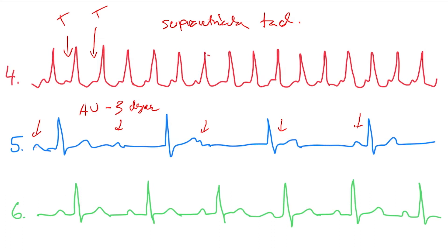Why is it not the second one? Because in the second one, the P would always be before the QRS. Here, a P is behind the QRS, for example. Okay? Yeah?